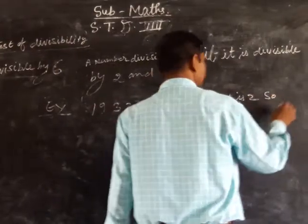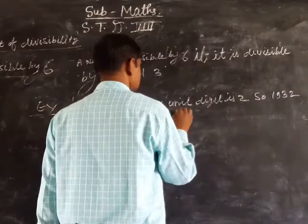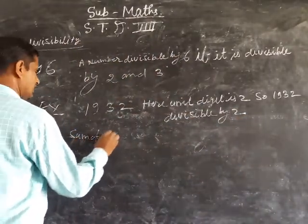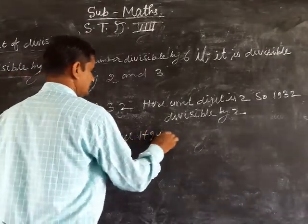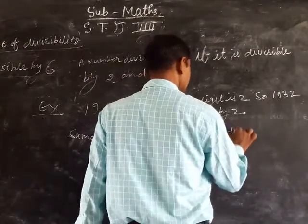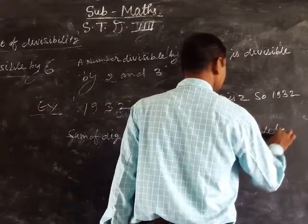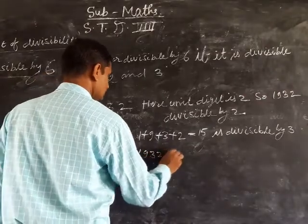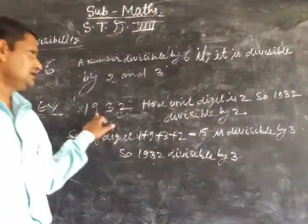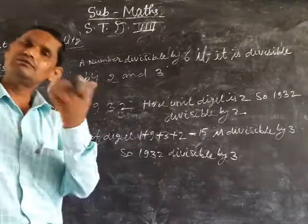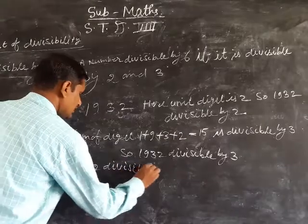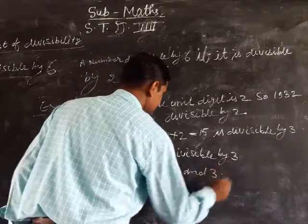The last digit of 1932 is 2, so it is divisible by 2. The sum of digits 1 plus 9 plus 3 plus 2 equals 15, and 15 is divisible by 3. So 1932 is divisible by both 2 and 3, and therefore 1932 is divisible by 6.